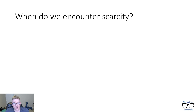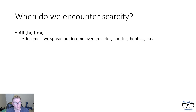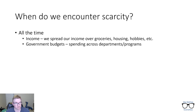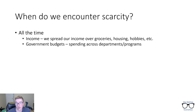So when do we encounter scarcity? The short answer is all the time. On a daily level, our income is scarce. We spread the money we take home over groceries, housing — whether that be rent or a mortgage — hobbies like golf or rock climbing, and so on. If only income wasn't scarce, life would be so much better, but ultimately we have to make choices. Government budgets as well — when governments are finalizing a budget, whether state, local, or federal, they have to allocate spending across departments and programs. Choosing to put a dollar towards military is a dollar that can't go towards education.